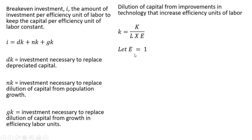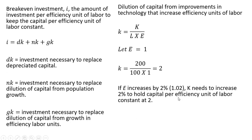Here is capital per efficiency unit of labor. Let's let E equal 1, so capital per efficiency unit of labor is 2 (200 divided by 100). If E increases by 2%, E will now equal 1.02, and k needs to increase 2% to hold capital per efficiency unit of labor constant at 2. So if E increases by 2% to 1.02, the numerator — capital — needs to increase by 2% to keep lowercase k constant at 2.